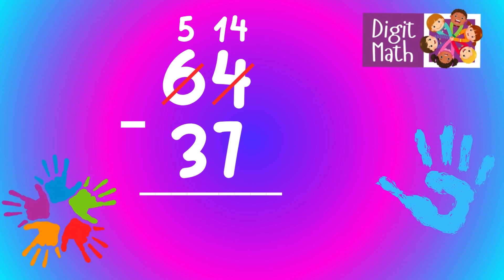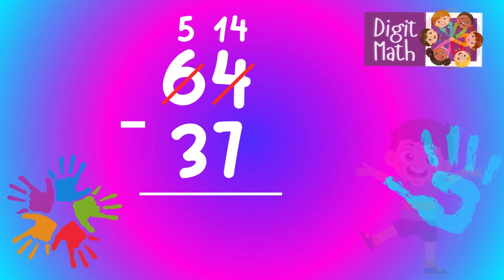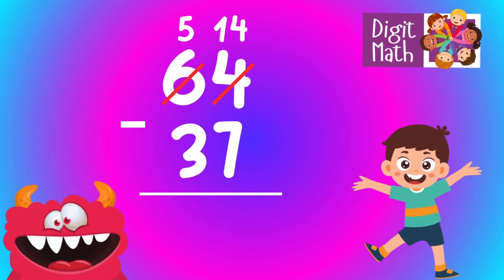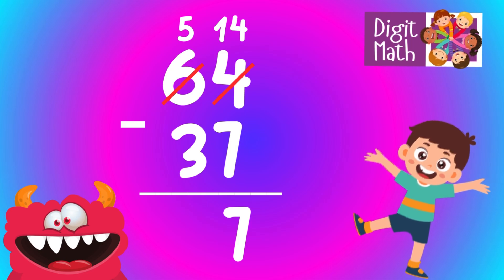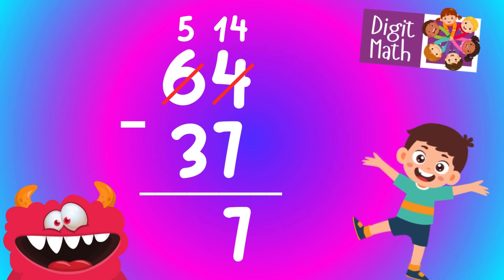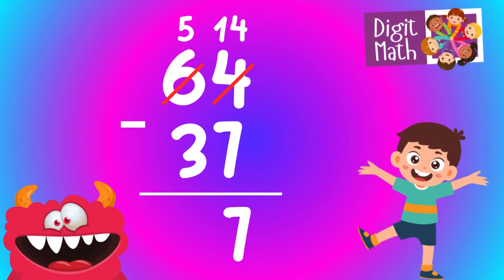Thus, the final result is 64 minus 37 equals 27.